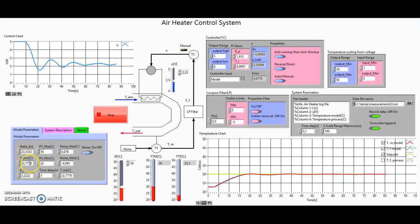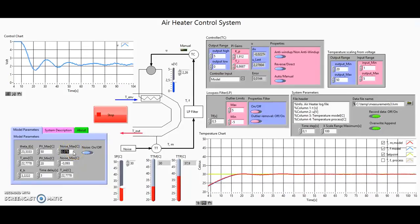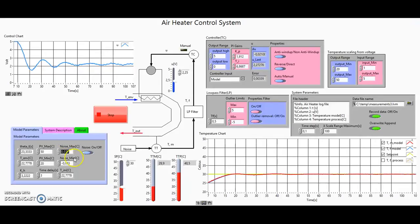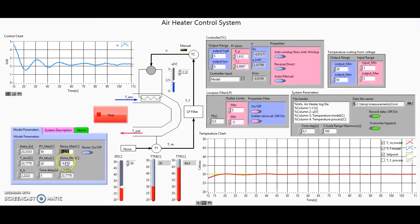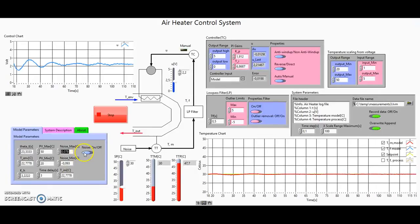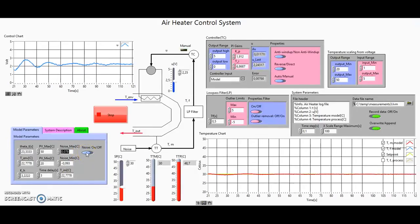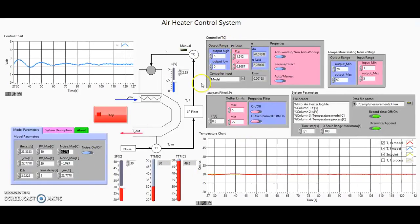Here are the model parameters. The time delay, time constant, environmental temperature, and gain are found using a brute-force algorithm in MATLAB. The resulting values are implemented here. The noise is found by calculating the average temperature from the log file when the control signal was zero for the first time; we found the maximum and minimum temperature values of that period and added those as noise. The noise can be turned on and off.